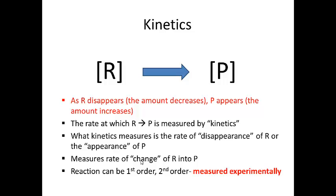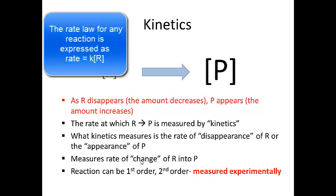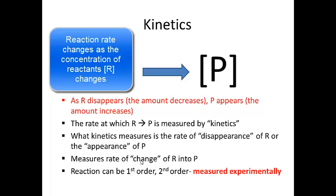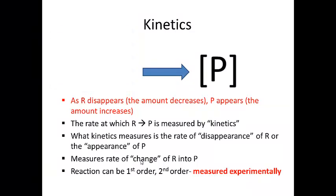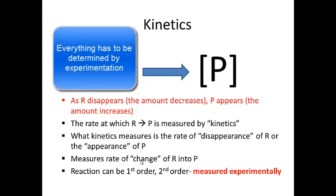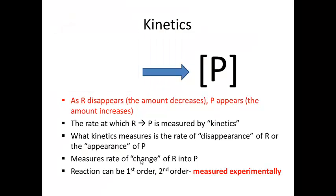Let's talk about kinetics. Reactants go through a mechanism to get to P, and while that's happening, R is beginning to disappear and the product P is forming. As R disappears, the concentration of R decreases, and as P appears, the concentration of P increases. The rate at which R is converted into P is measured by what we call kinetics. Kinetics measures the rate of the disappearance of R and the appearance of P. A reaction can be first order or second order, and the order as well as the rate constant is all determined experimentally.